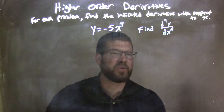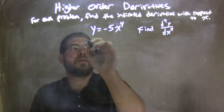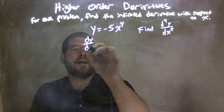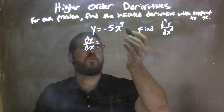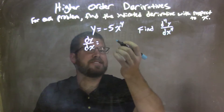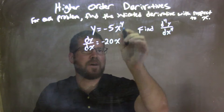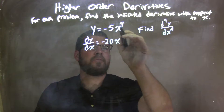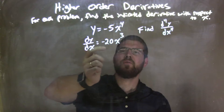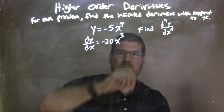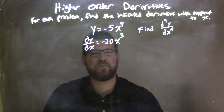To get to the 4th derivative, I need to find the first derivative. So dy/dx — I'm going to use the power rule. 4 comes out, 4 times 5 is 20, so we have a negative 20 here. The exponent: 4 minus 1 is 3. So our first derivative is negative 20x to the 3rd power. That 4 times 5 gave me that negative 20.